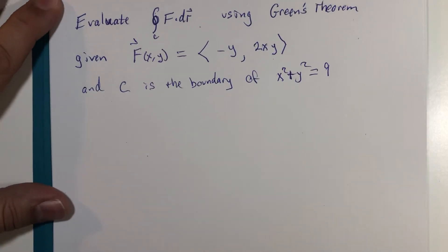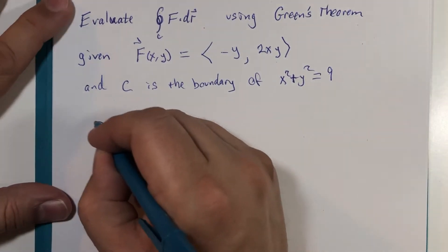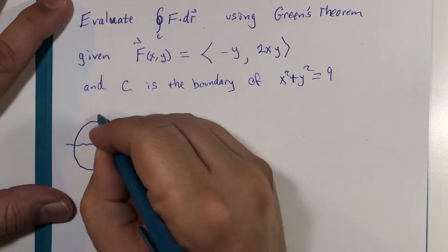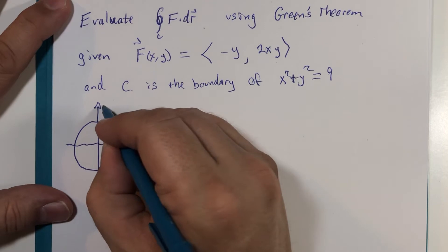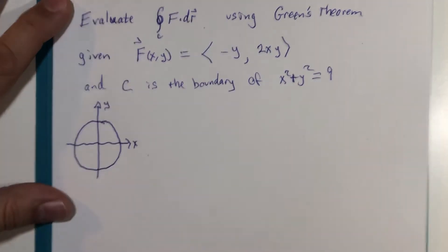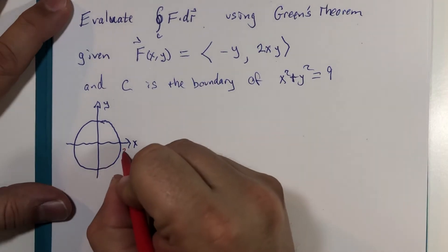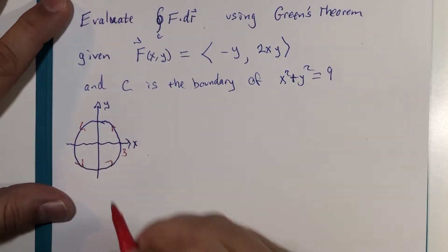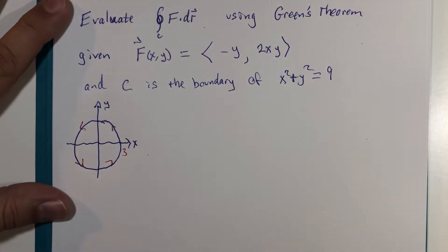So visually speaking, there's my two-dimensional region of integration, y and x, radius 3, counterclockwise around the closed or connected path.